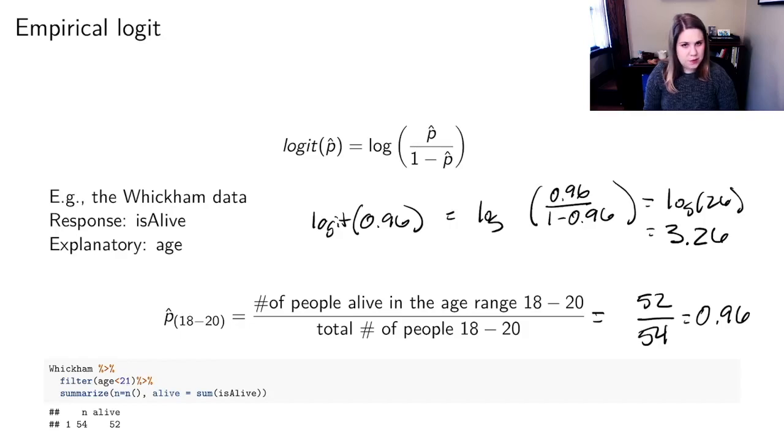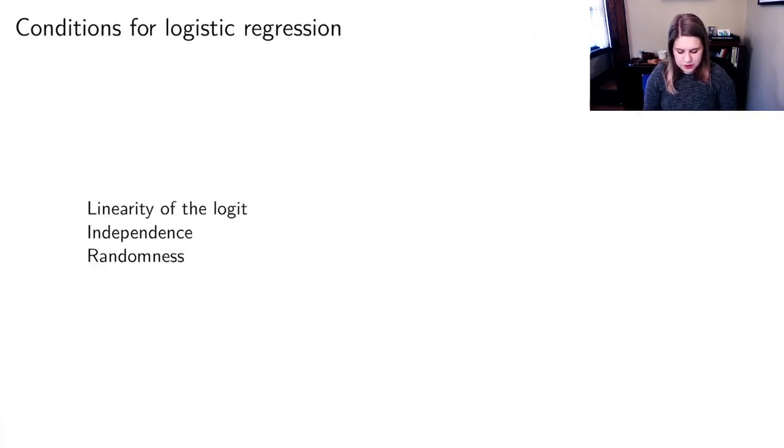As we've talked about, people don't have a ton of intuition about log odds. Your log odds of being alive being 3.26, is that good, is that bad? I don't know. Rather than the probability of being alive, 96% chance of being alive, I understand what that means.